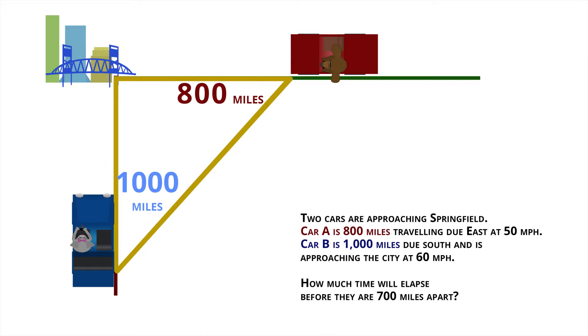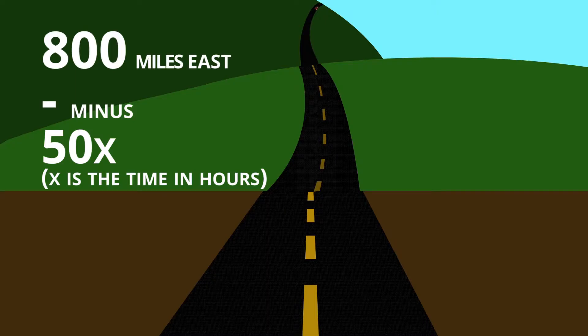So at any given time we would say the distance of car A from Springfield is 800 minus 50x. Now you're probably saying, well why minus 50x? Well remember, for every hour that this car is traveling it will travel 50 miles.